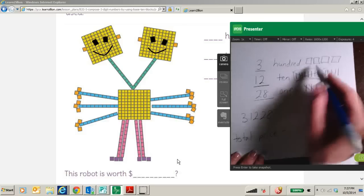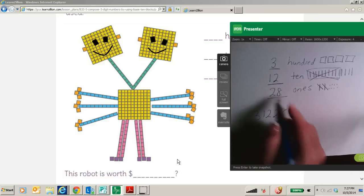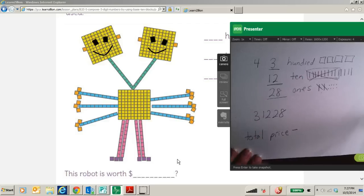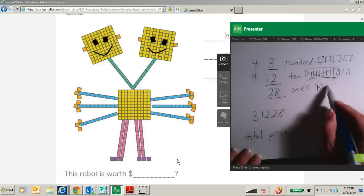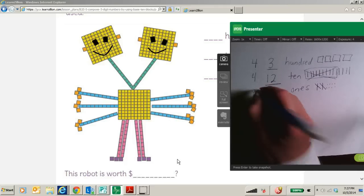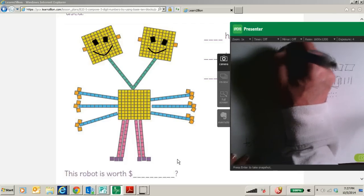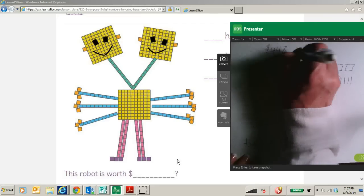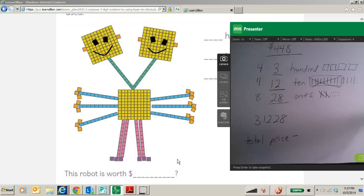if I count, I have instead of 300, 12 tens, and 28 ones, I have 4 hundreds, 1, 2, 3, 4 tens, and 8 ones. Or, the price would be 448 is the price of the robot. Is that the price that you were able to get?